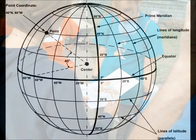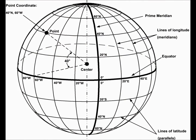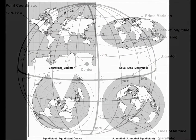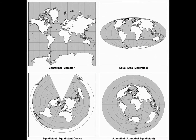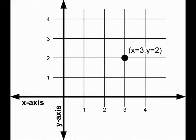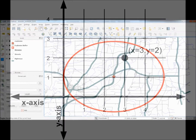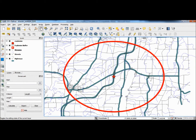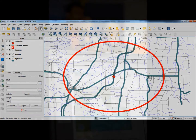Spatial thinking is the idea of using the properties of space, such as distance and scale, to structure, solve, and reason about problems. Spatial thinking processes can be supported with a variety of digital, interactive tools, such as Geographic Information Systems, or GIS.